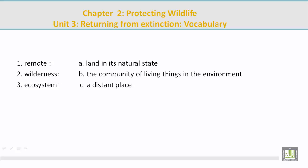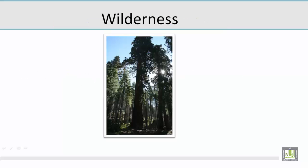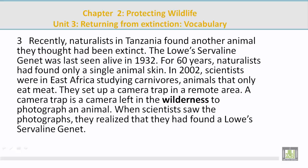Number 2: wilderness. Mohamed, please give the correct meaning on the right. The answer is: land in its natural state. Now let's look at a picture related to 'wilderness.' Mohamed describes large trees that haven't been touched for a long time — perhaps a thousand years. That is what wilderness means: land in its natural state. The paragraph reference is: 'A camera trap is a camera left in the wilderness to photograph an animal.' If you're going to photograph an animal in the wilderness, it must be in its natural state with no humans around.